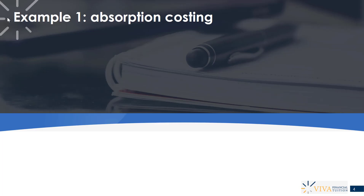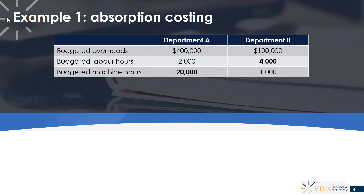Let's look at an example for calculating overhead absorption rates. We have two departments — Department A and Department B — which have estimated their budgeted overheads for the period. Department A has estimated overheads of $400,000 and Department B has estimated $100,000. They've also estimated their labour and machine hours for the next period. Department A has budgeted labour hours of 2,000 and budgeted machine hours of 20,000. The $20,000 figure for budgeted machine hours is in bold, indicating this department is machine intensive.